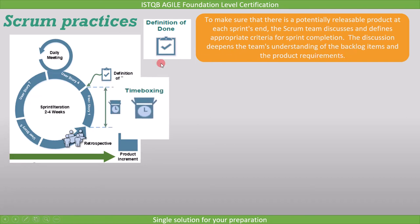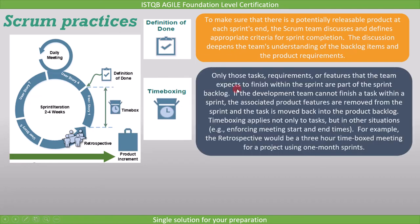Next is Time Boxing. Only those tasks, requirements, or features that the team expects to finish within the sprint are part of the sprint backlog. If the development team cannot finish a task within a sprint, the associated product features are removed from the sprint and the task is moved back into the product backlog.